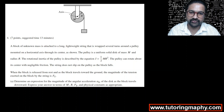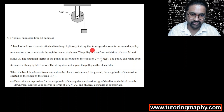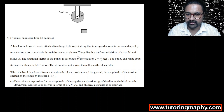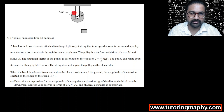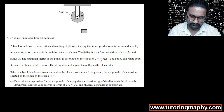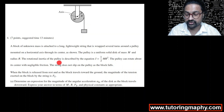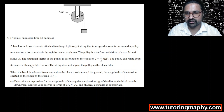We are given that there is a block of unknown mass which is attached to a long lightweight string that is wrapped several times around a pulley mounted on a horizontal axis through its center. This is the pivot or axle, this is our disk of mass M and radius R, and this is the block which hangs from it. The pulley is a uniform disk of mass M and radius R, and the rotational inertia of the pulley is given as (1/2)MR².